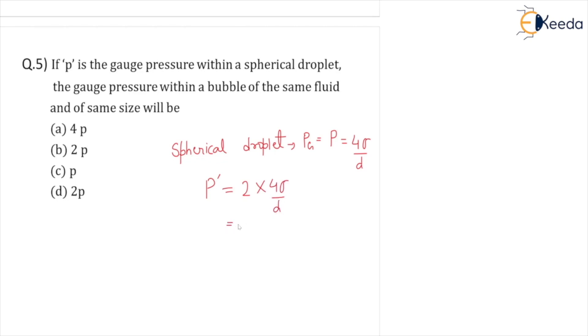So we can write 2 times 4 sigma by d. We can see in this equation 4 sigma by d equals p from this equation. So we can write 2 times p. So p dash equals 2p. So the answer is 2p.